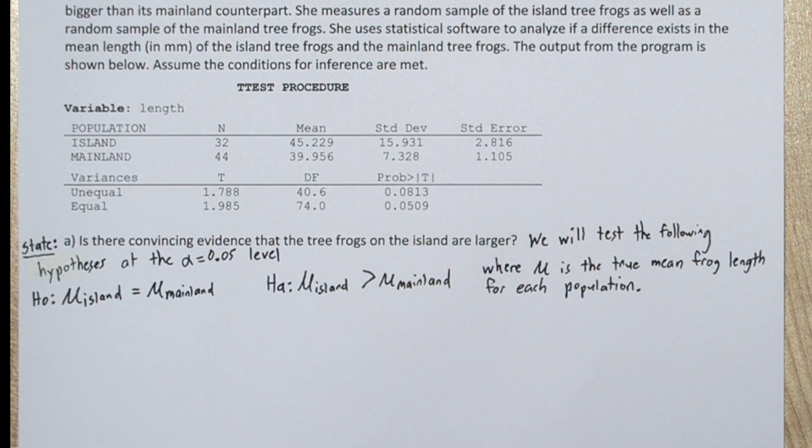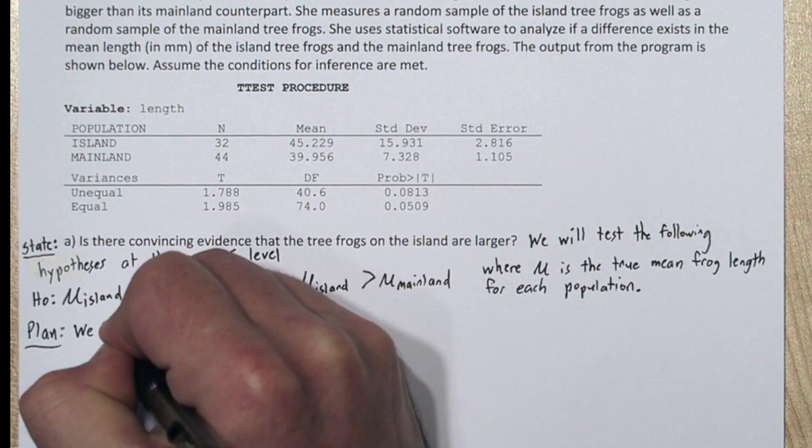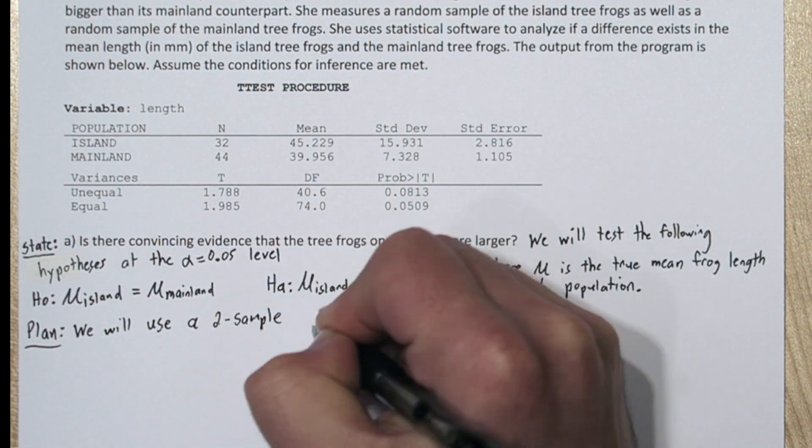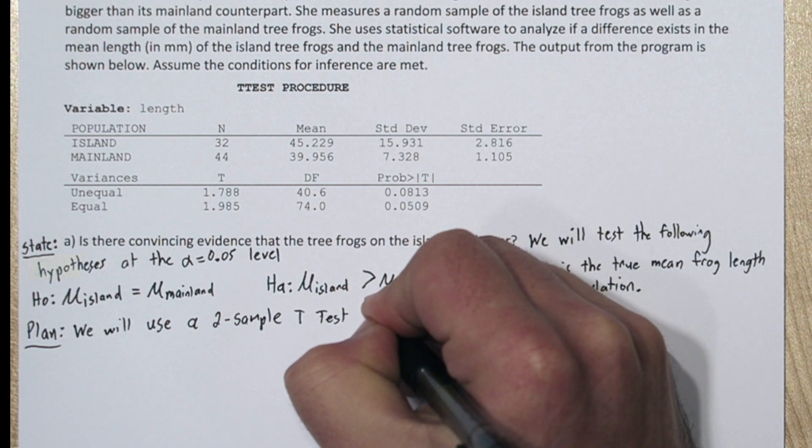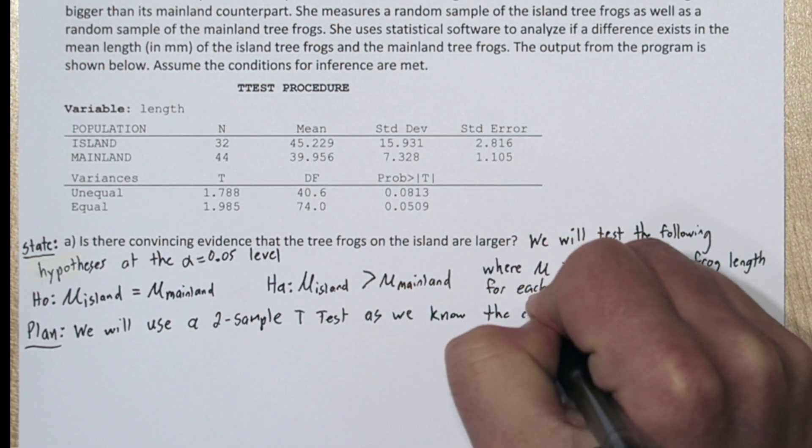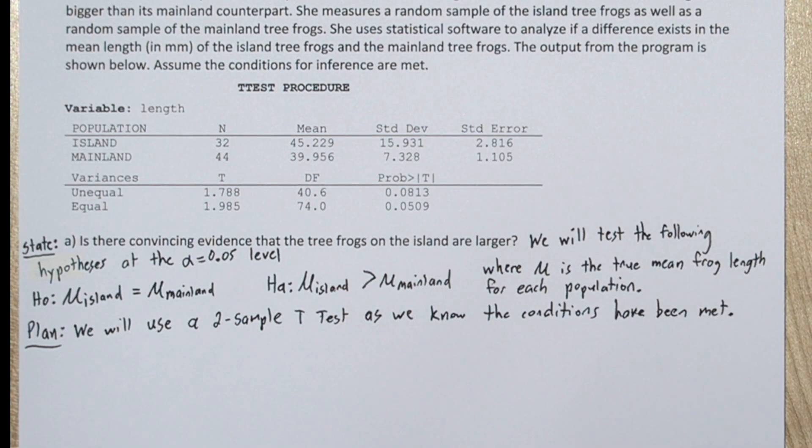And we're going to test this at the alpha equals 0.05 level. Now in the stem of the problem they say assume the conditions for inference have been met. So in our plan step we'll say we will use a two-sample t-test as we know the conditions of inference have been met.